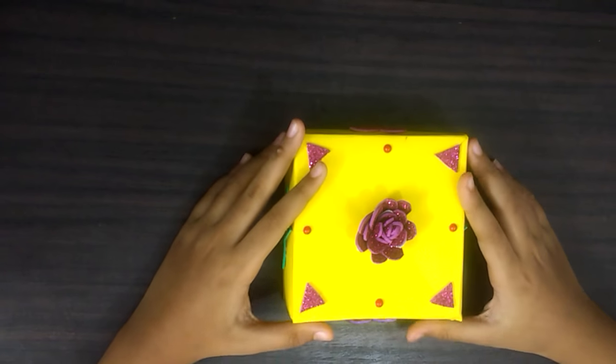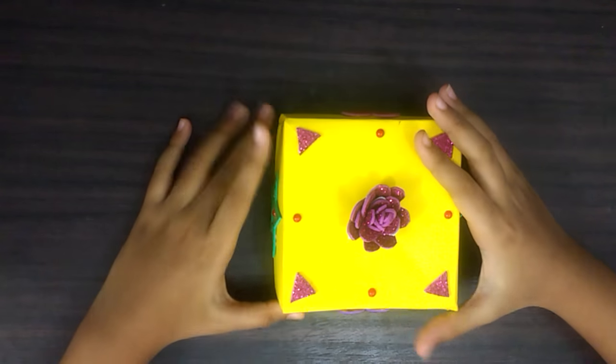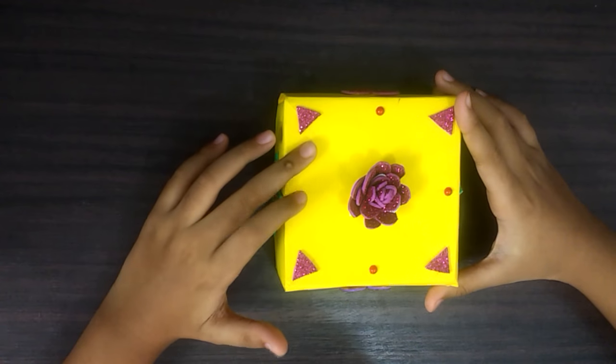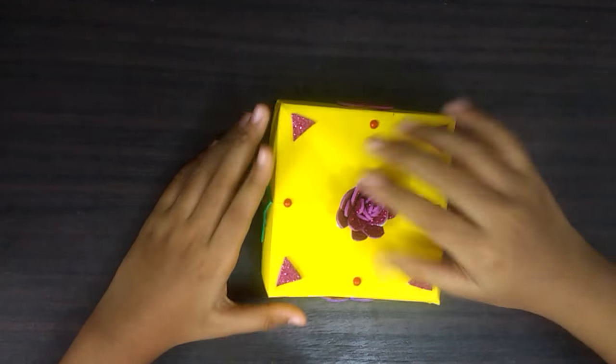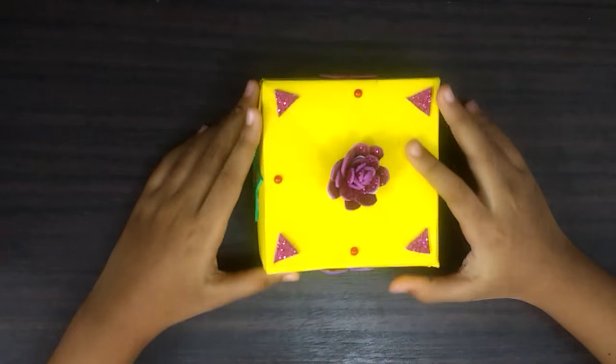I have decorated my box with stickers. And I have made a rose from the foam sheet, which I am going to use as a handle. And I have applied beads. You can also draw over your box to decorate it. You can add sparkles.